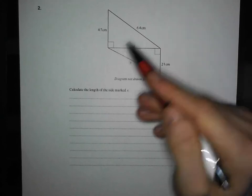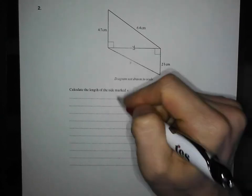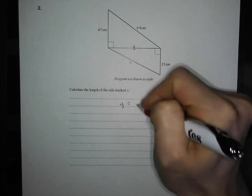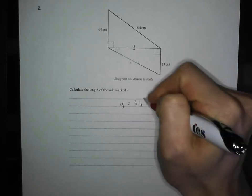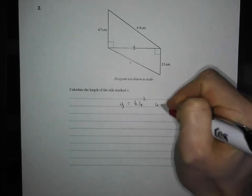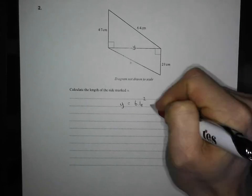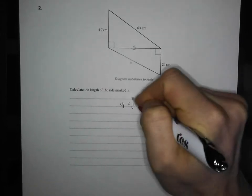Square it, square it, subtract it, square root it. So y is equal to hypotenuse, square it, shorter side, square it, subtract it, square root it.